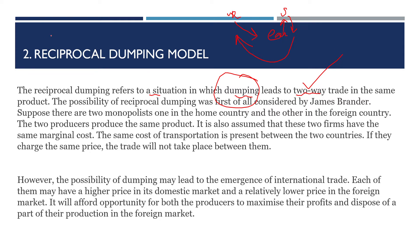If we produce goods in our home country and we have surplus goods, we take those surplus goods to foreign countries where we sell them at a lower price, while in our home country there is a higher price. In that process, we generally call it dumping.